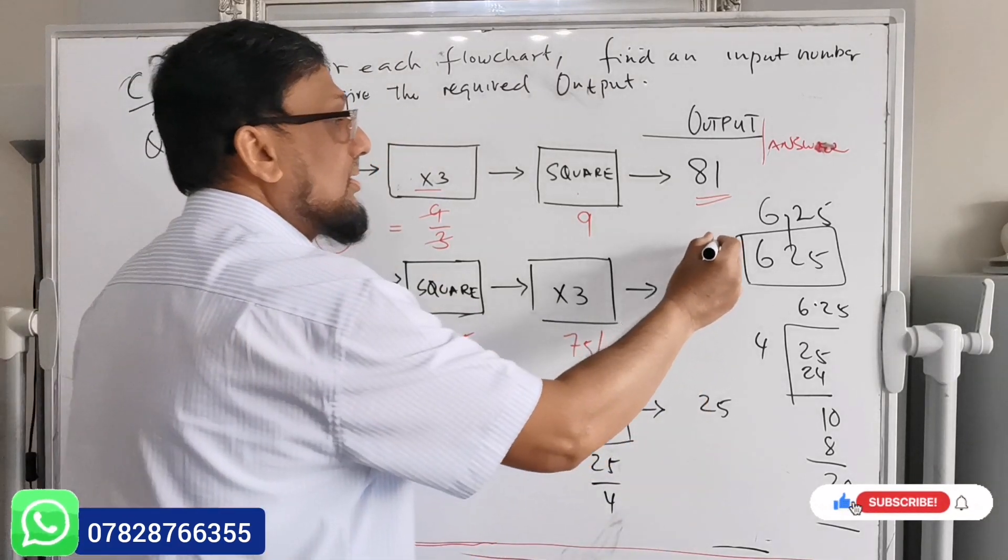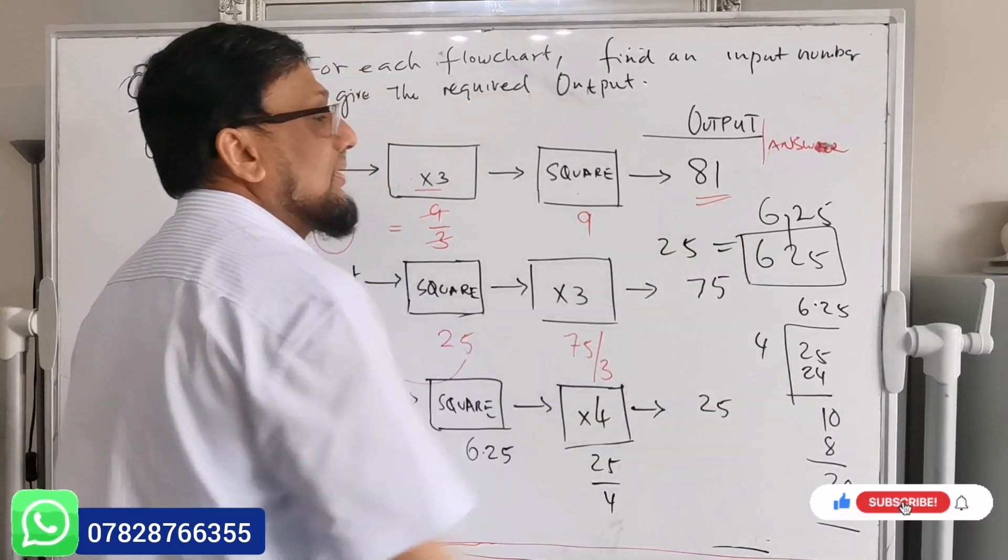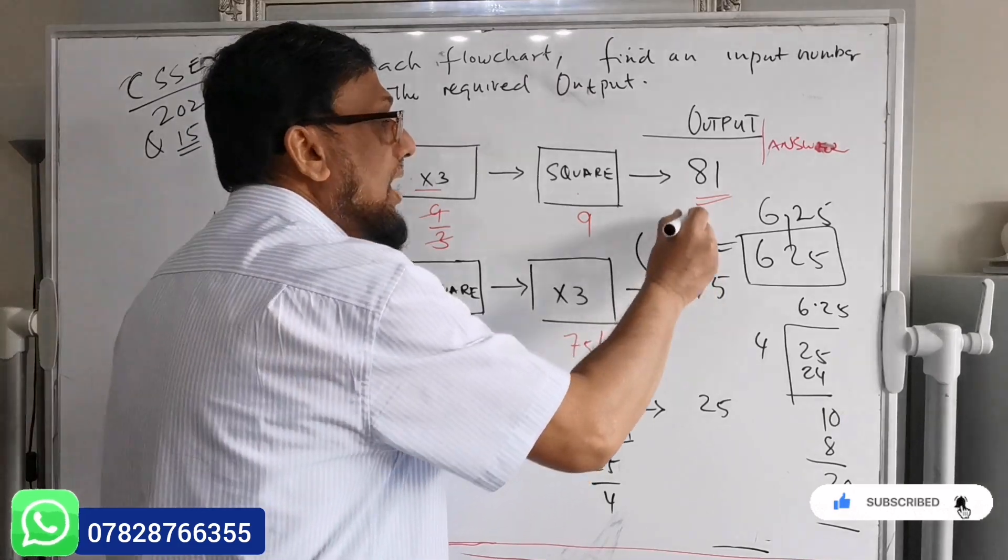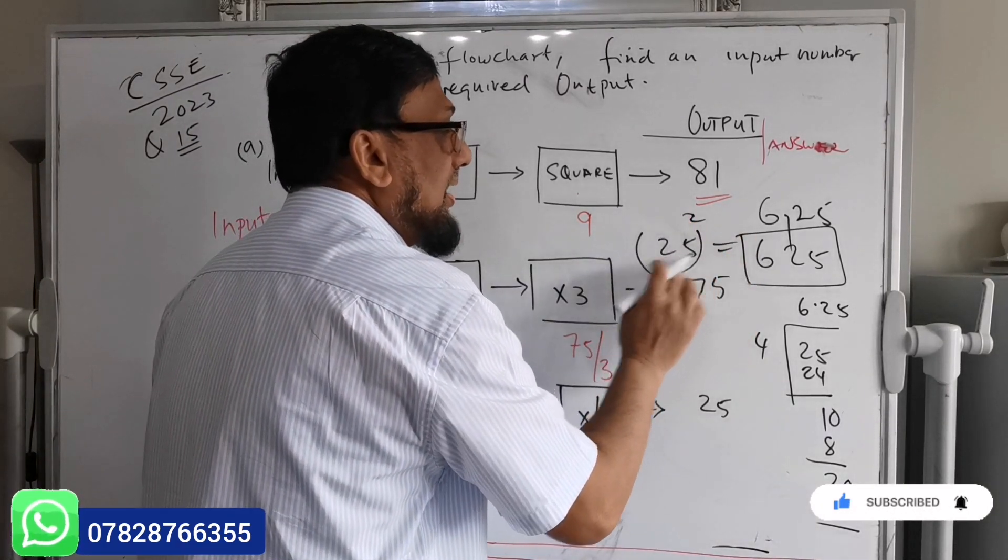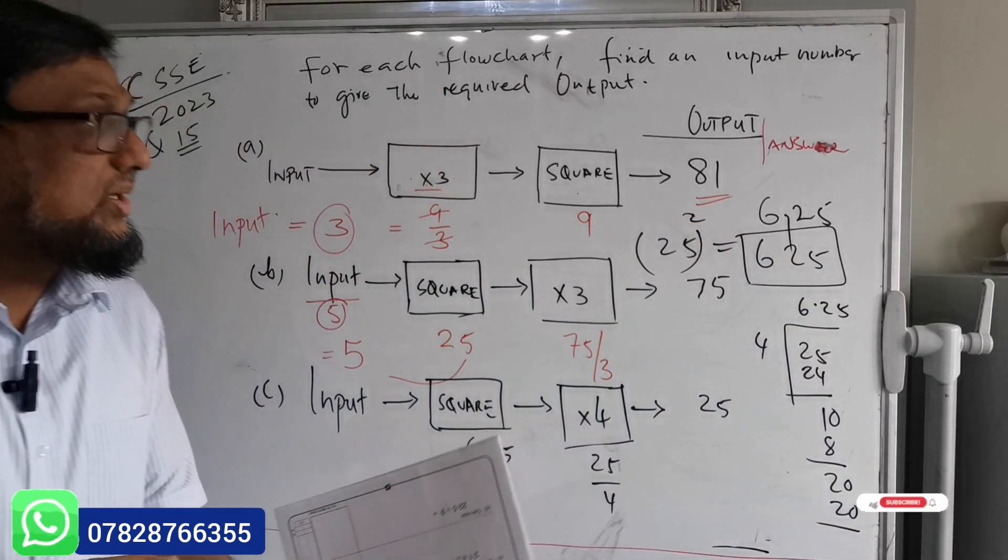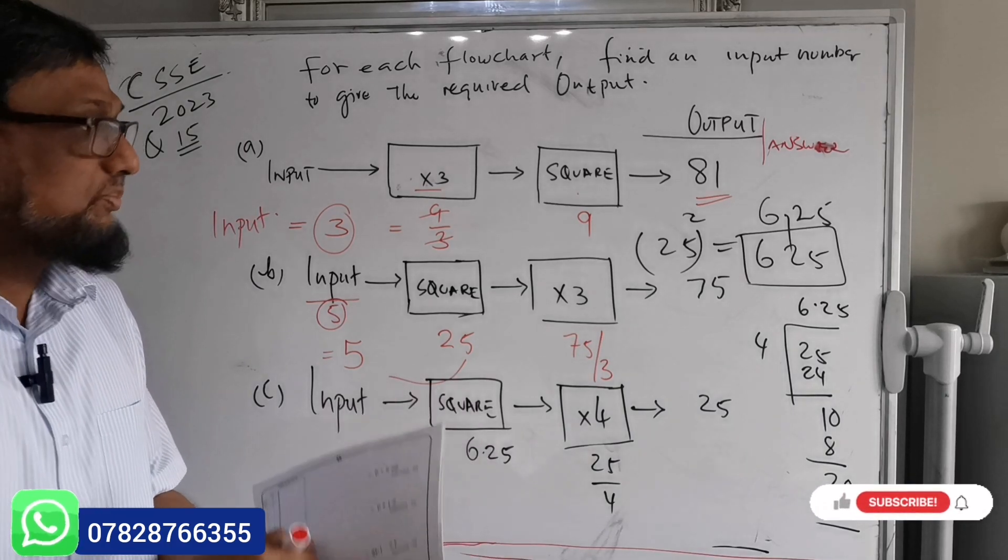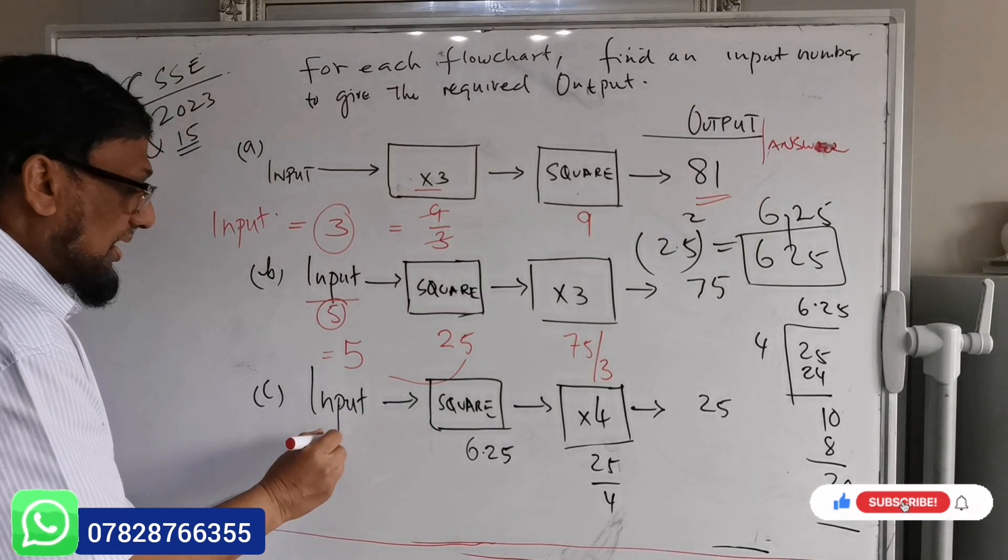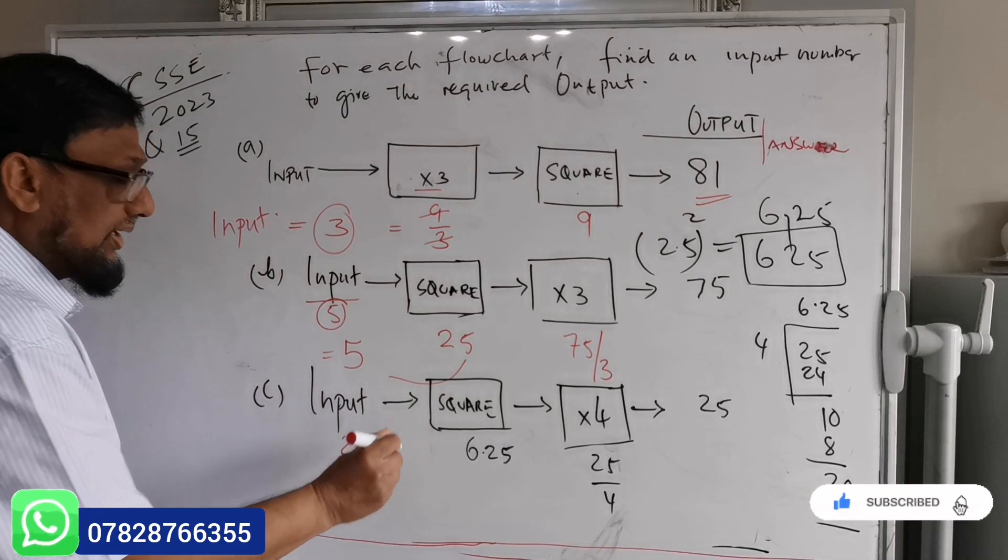So square of 5 is 25 and 25 times 25 is 625. It means what is the square of 25 which is equal to 625. Very simple, you put the decimal here, so the input is 2.5.